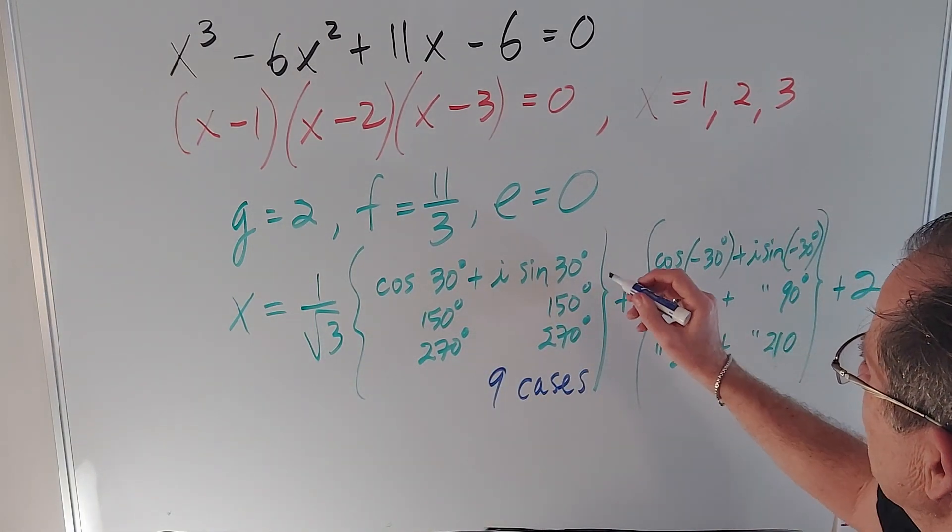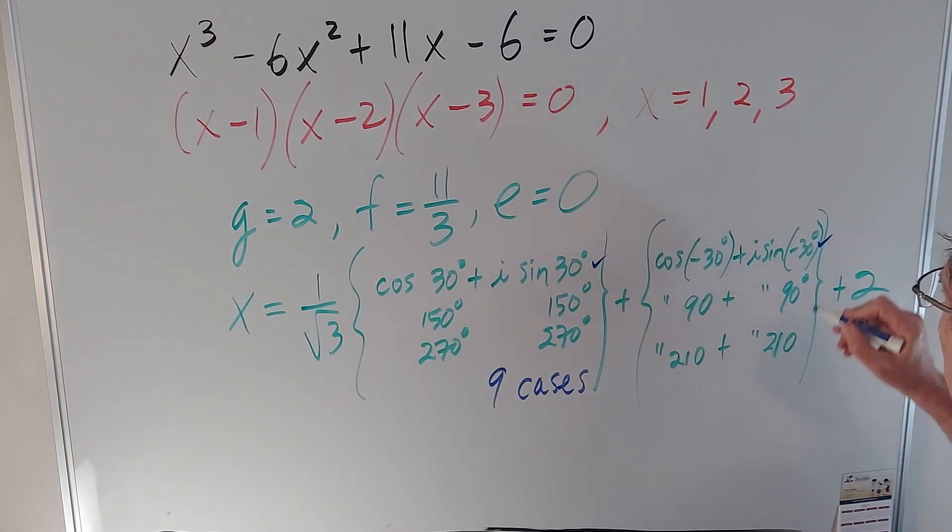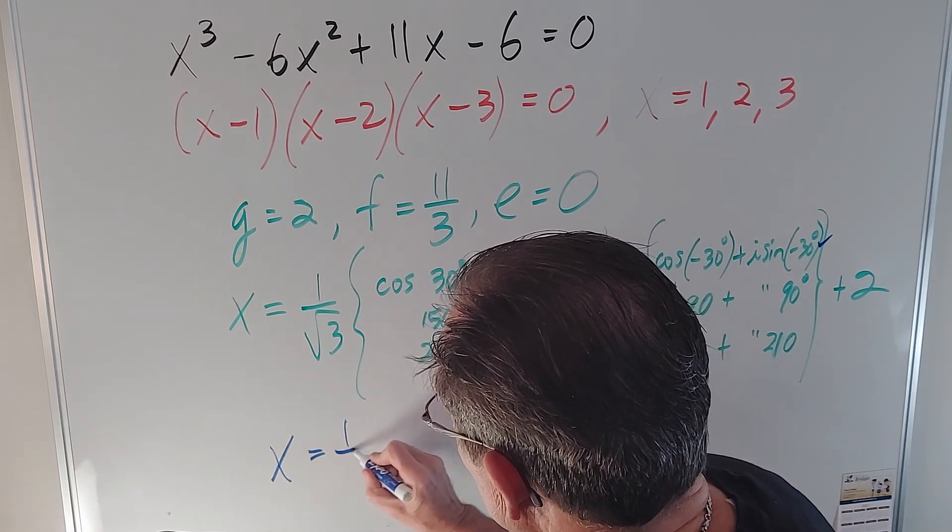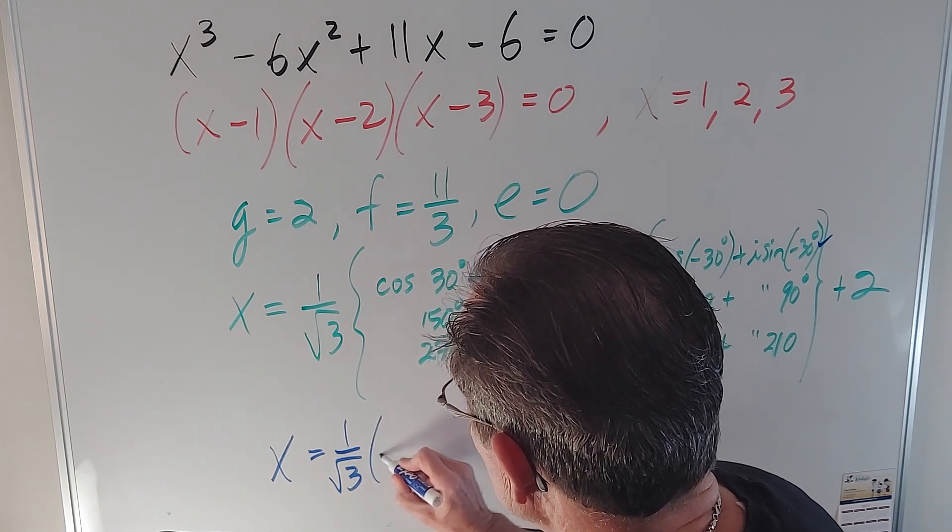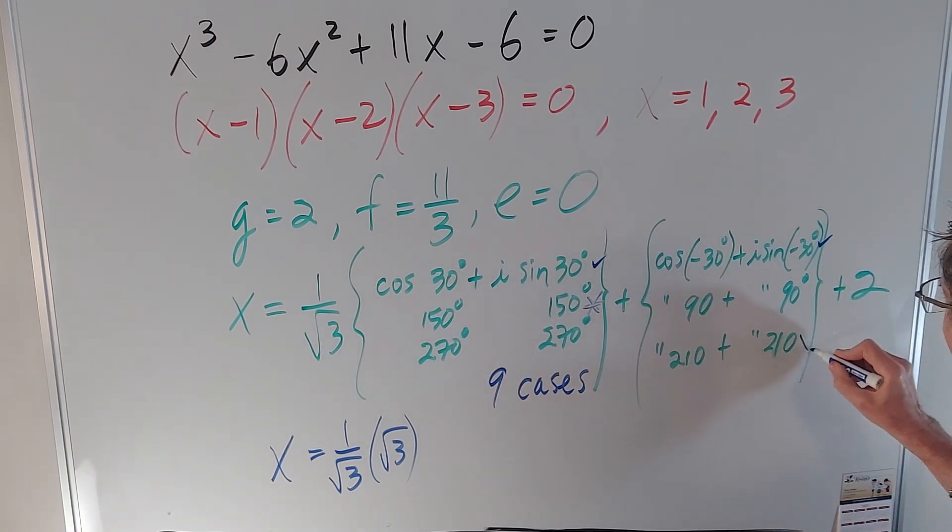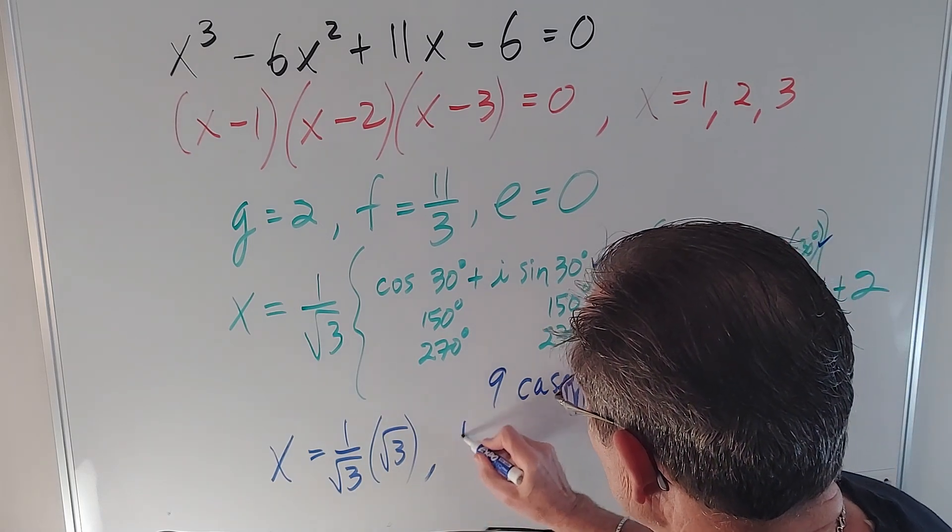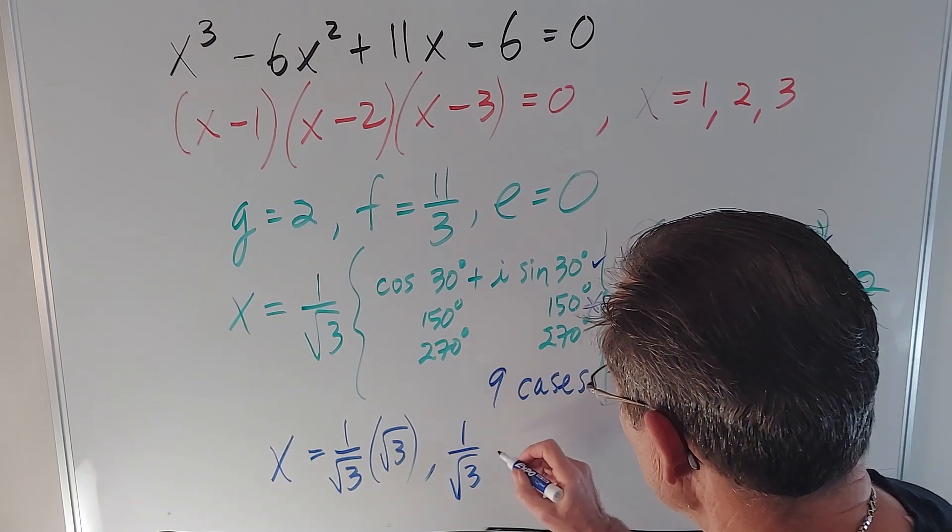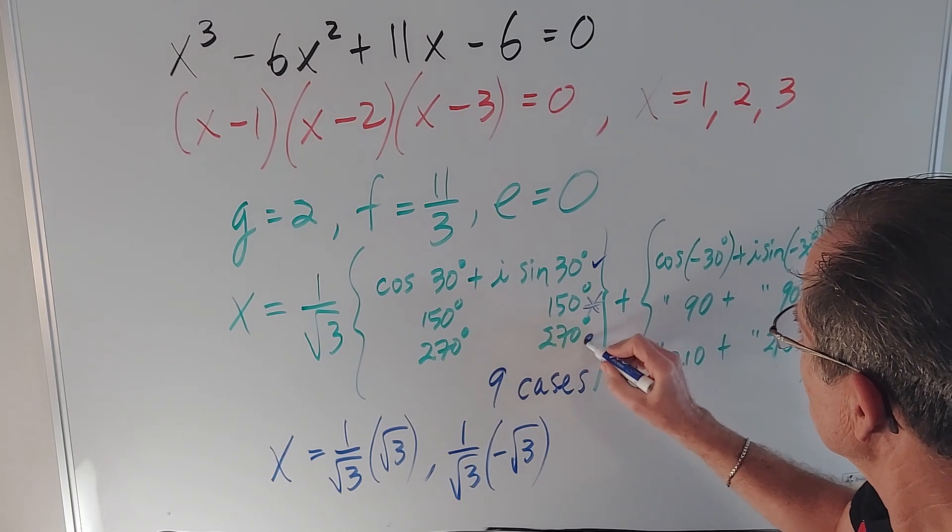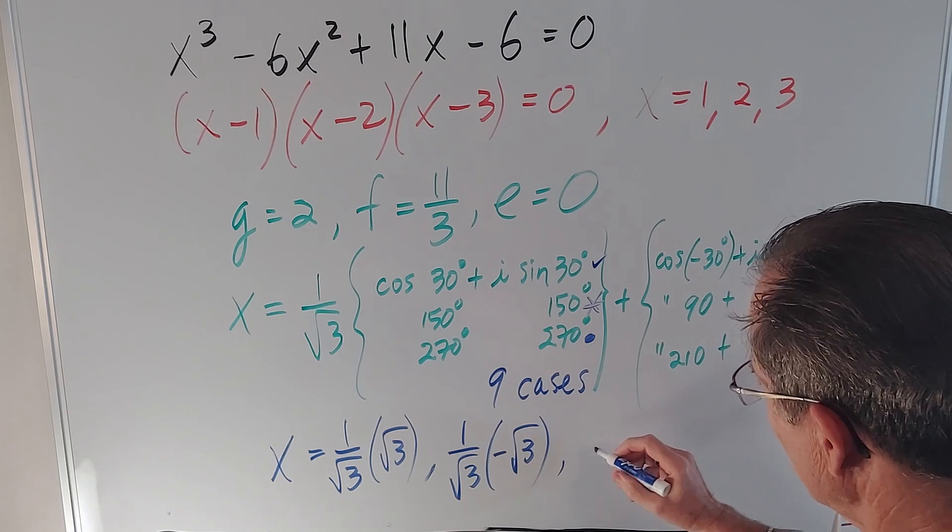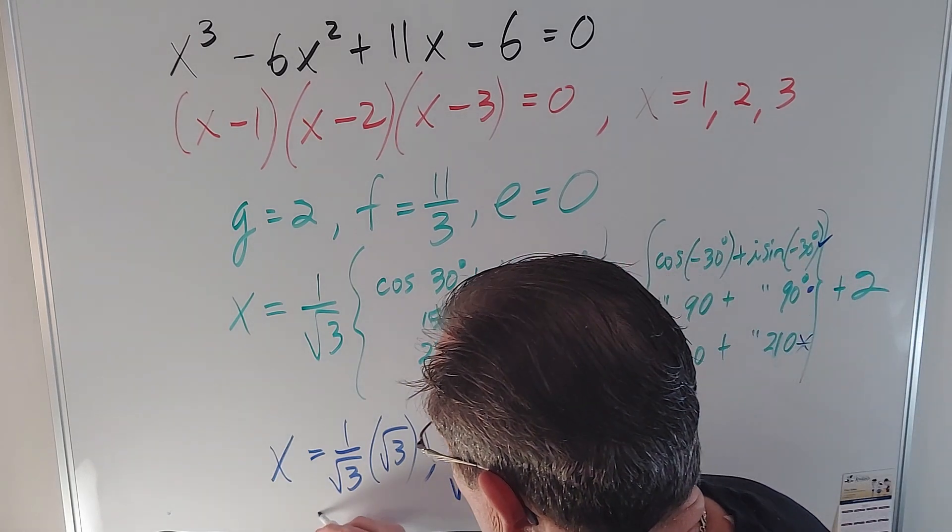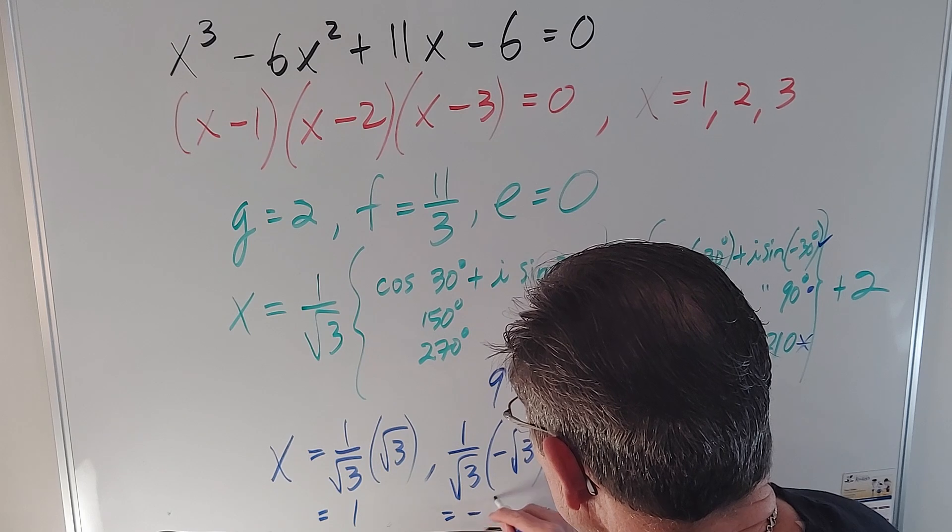I've done all the dirty work. If I combine this one with this one, it turns out that x is equal to 1 over root 3 times root 3. If I combine this one with this one, it turns out that x is equal to 1 over root 3 times negative 1 over root 3. And if I combine this one with this one, it turns out that x is equal to big fat zero. So this is 1, this is negative 1.